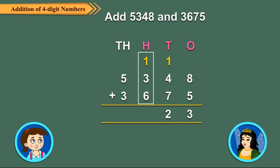1 hundred carried over plus 3 hundreds plus 6 hundreds is equal to 10 hundreds, which is 1 thousand plus 0 hundreds. Carry over 1 to the thousands column and write 0 under the hundreds column.